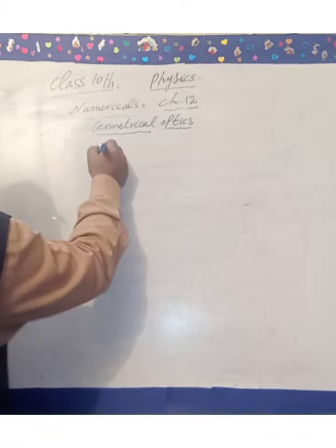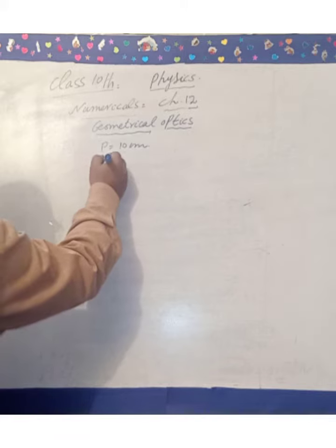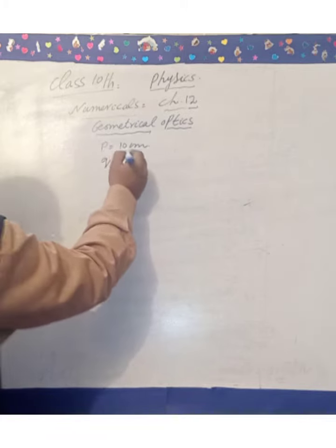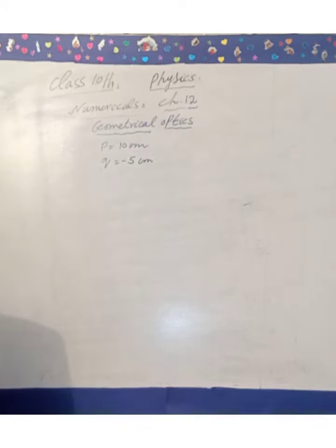If you read the statement: An object 10 cm in front of the convex mirror. Object, to denote the object, 10 cm in front of the convex mirror forms an image 5 cm behind the mirror. The image is Q, 5 cm minus sign. Minus sign behind the mirror.